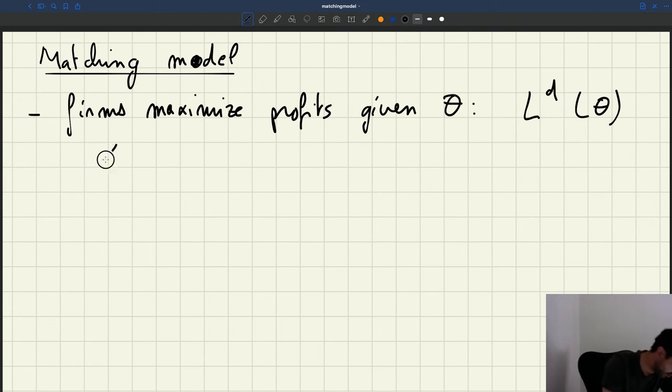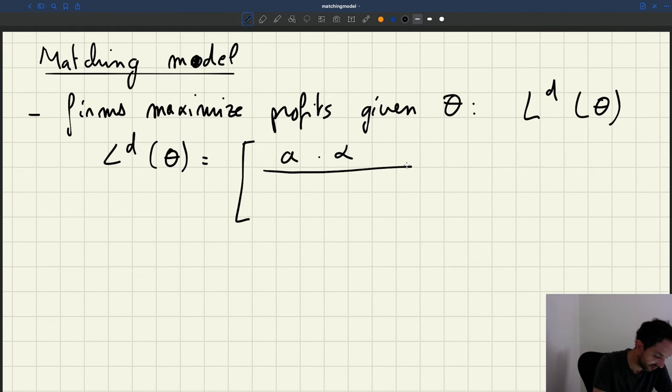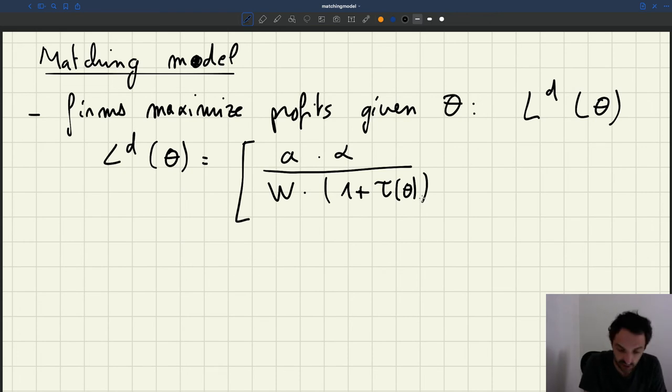And just in case that's useful, just for reference, we showed that LD of theta was given by A, productivity, alpha, the shape of the production function, W, a wage that's taken as given and later in the semester we'll talk more about where wages come from, 1 plus tau of theta, where tau of theta is a recruiter-producer ratio that depends on the tightness, alpha here, then 1 over 1 minus alpha. So we said that firms maximize profit and so the employment that they want to sustain is given by the labor demand LD of theta.